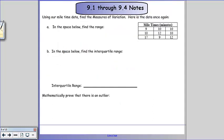Moving on here, we're still at our mile times. First, we're going to find the range. So we have to identify the largest number, which was 17, and the minimum, which was 9. And when we subtract them, we find the range of numbers is 8.